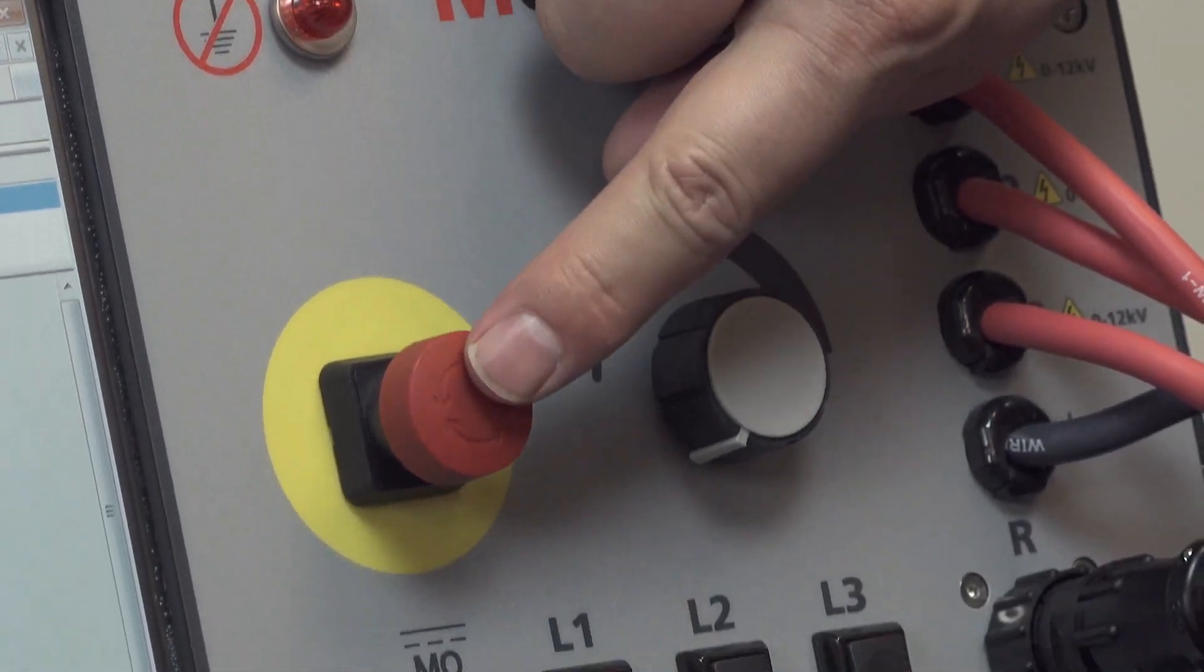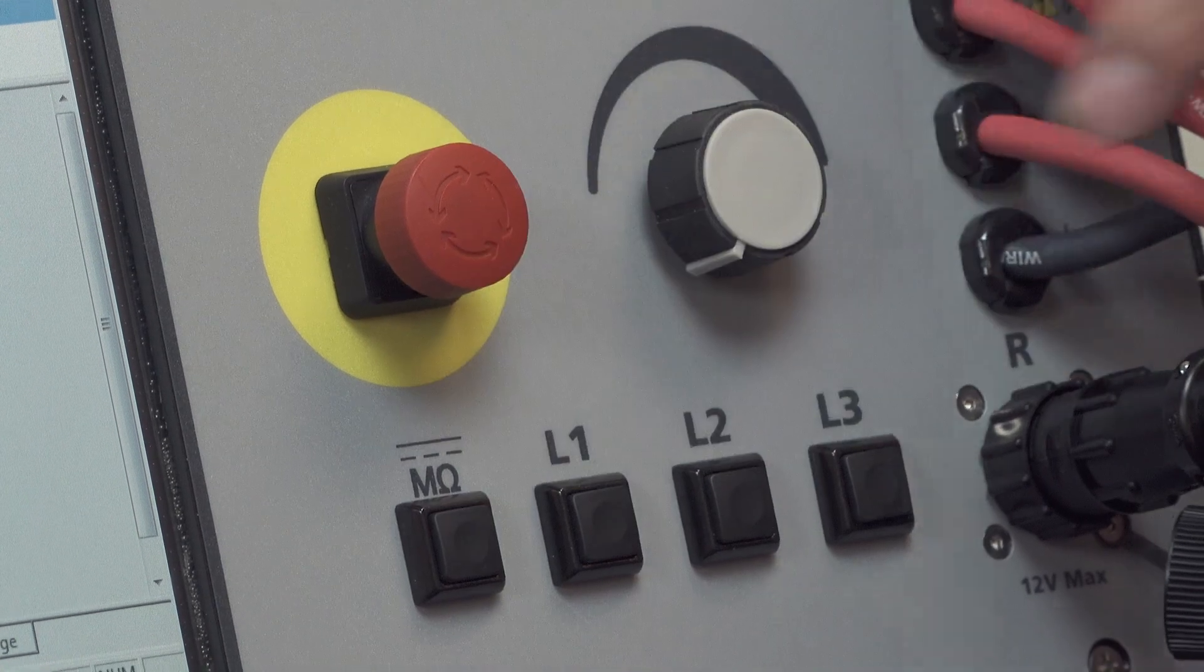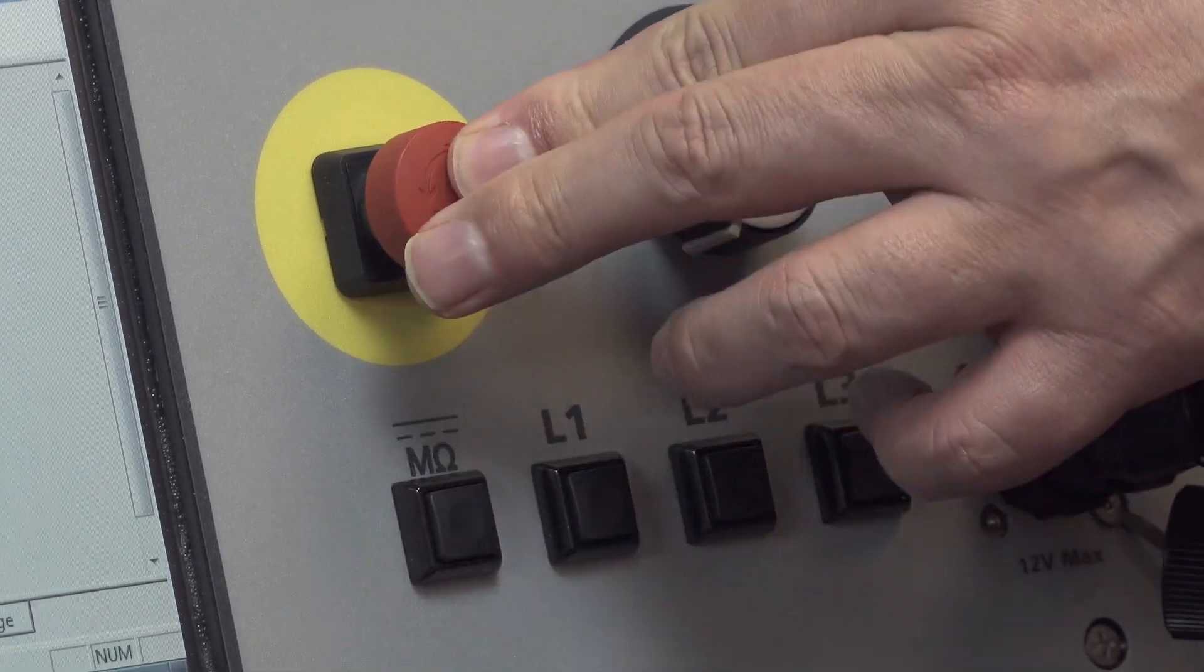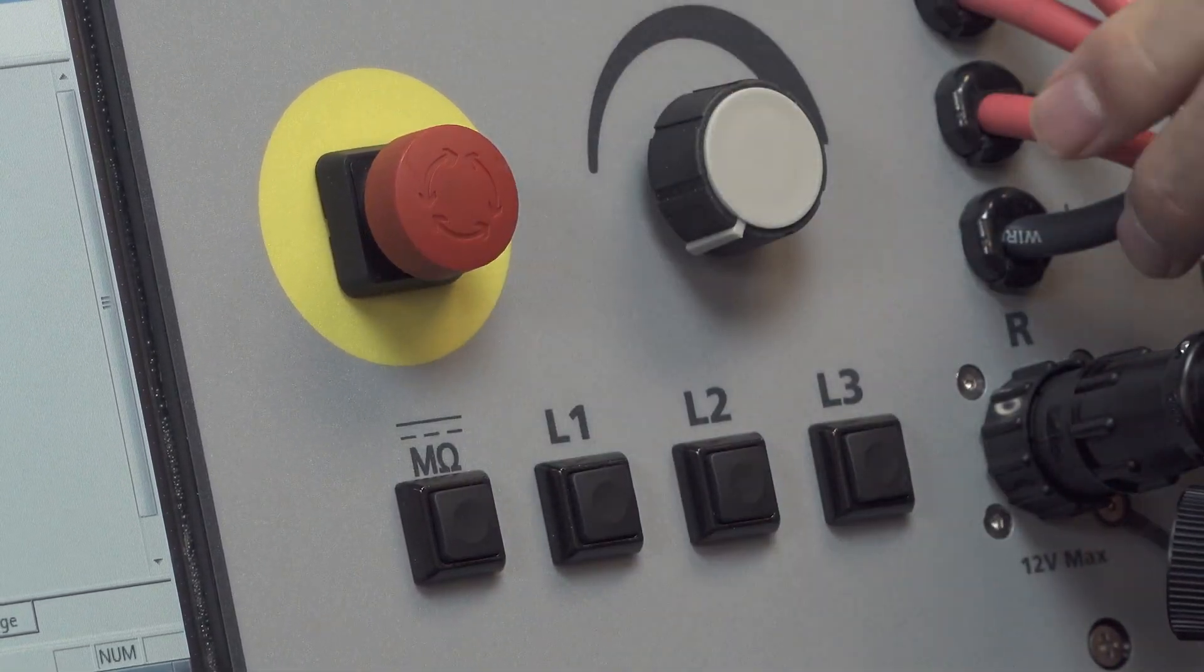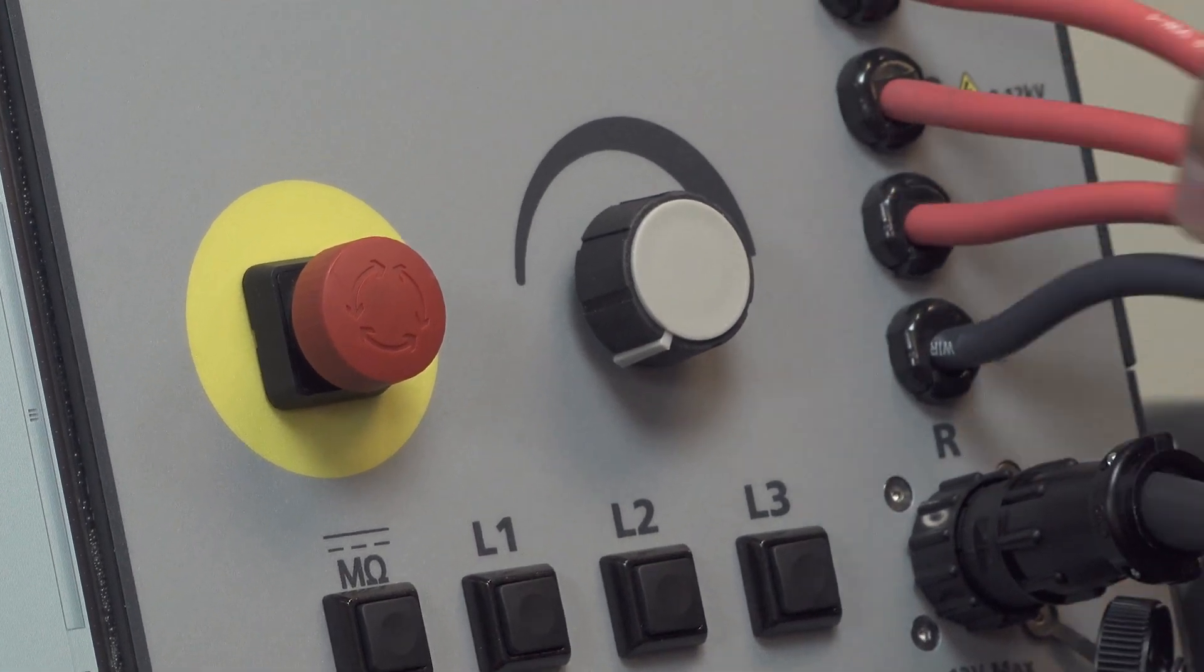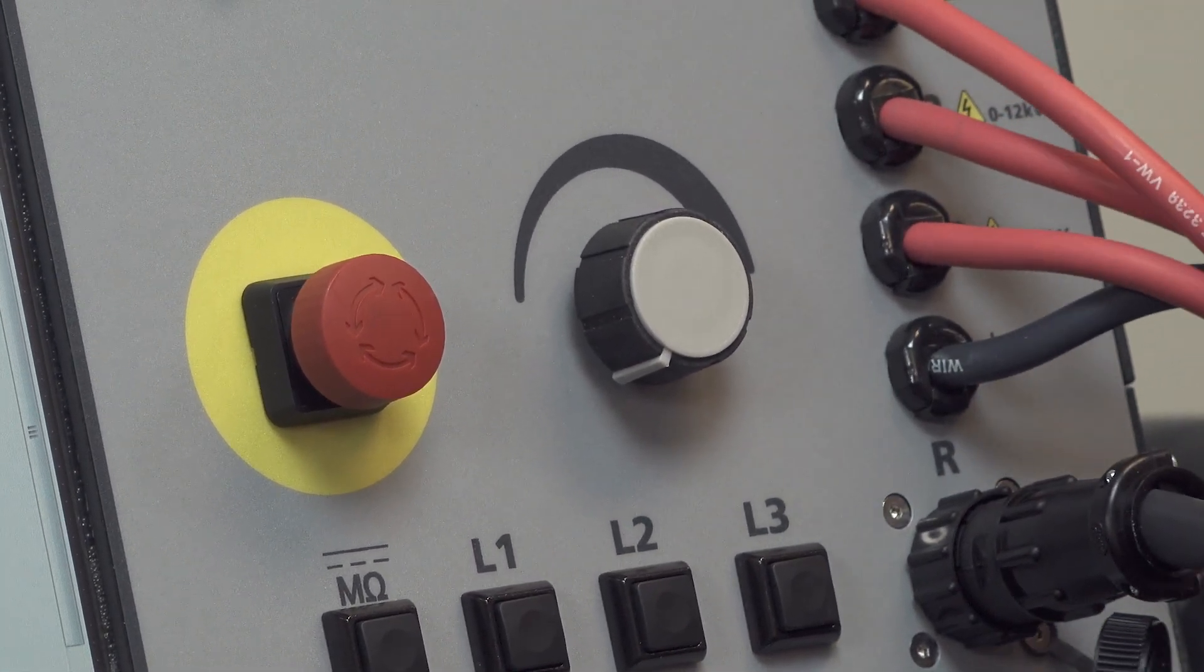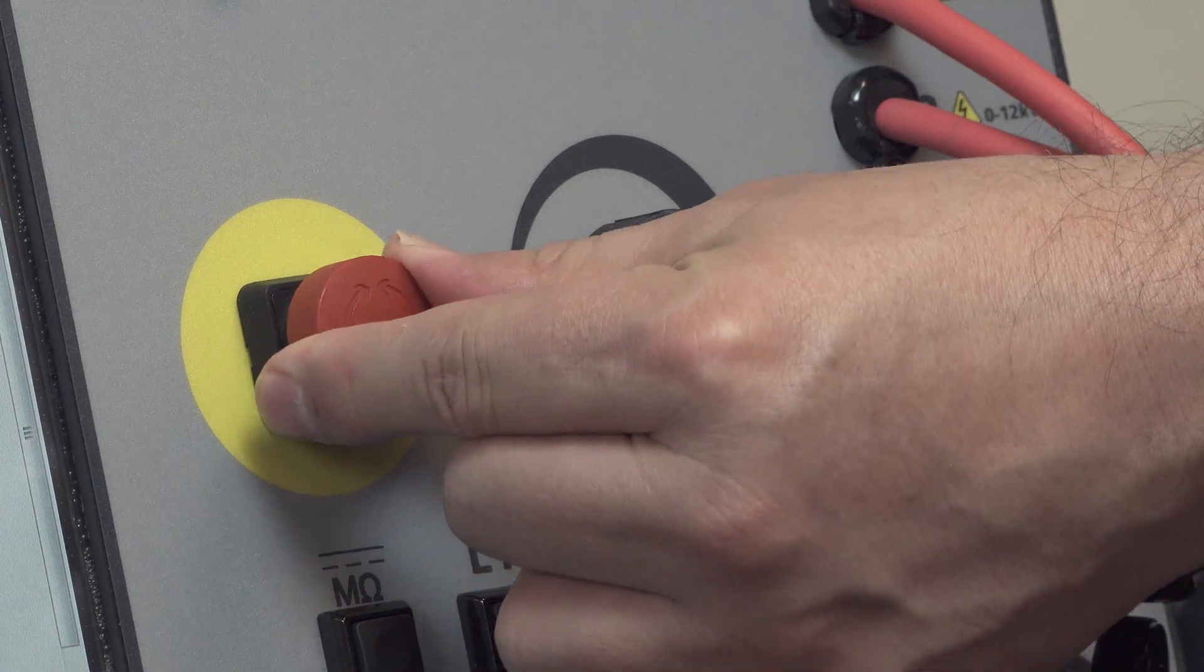Below the open ground we have the equipment stop, the e-stop button. If you press this button it will ensure that voltage is removed from your high voltage leads at any time. To reset that, you simply twist the button.